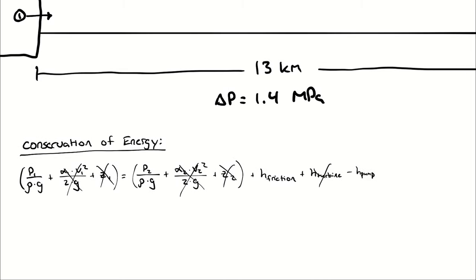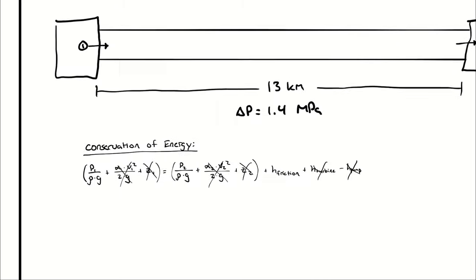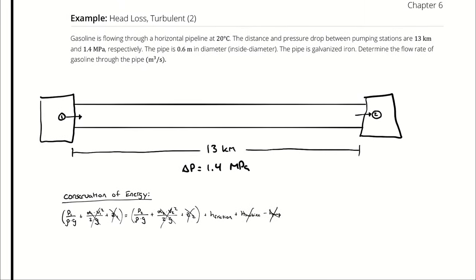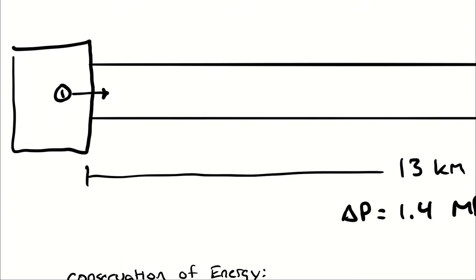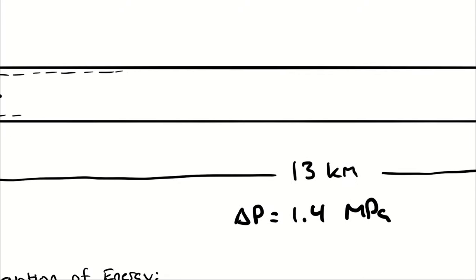Neglecting turbine head and pump head. The problem mentions a pump, but we have two approaches: include the pump in the control volume (pump head present, no pressure drop) or exclude it (pressure drop present, no pump head). Since we already know the pressure drop, we draw our control volume excluding the pumps.